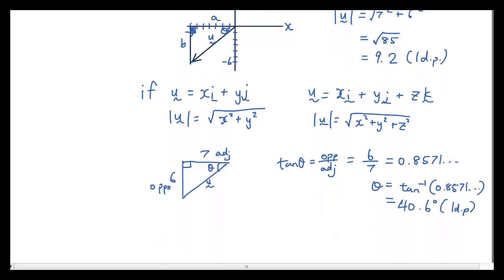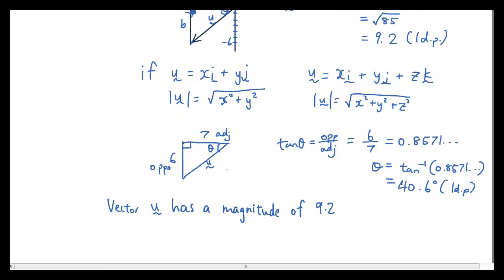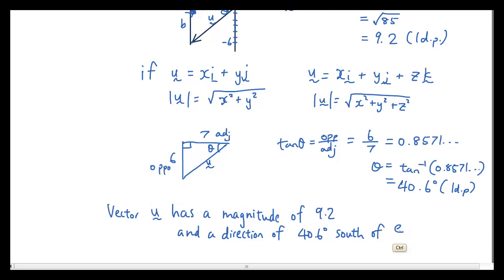Now you would say something like vector u has a magnitude of 9.2 and a direction of 40.6 degrees south of west.